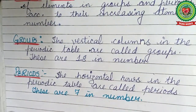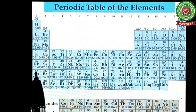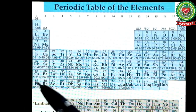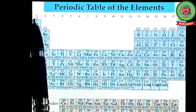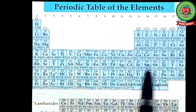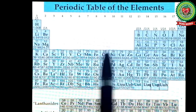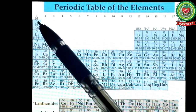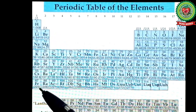Let's have a quick glance at the periodic table. Here you can see a chart of elements where each element is positioned according to its increasing atomic number. The vertical columns are called groups, starting from 1 and going to 18 — so there are 18 groups in total. The horizontal rows are periods, and these are seven in number: 1st, 2nd, 3rd, 4th, 5th, 6th, and 7th.